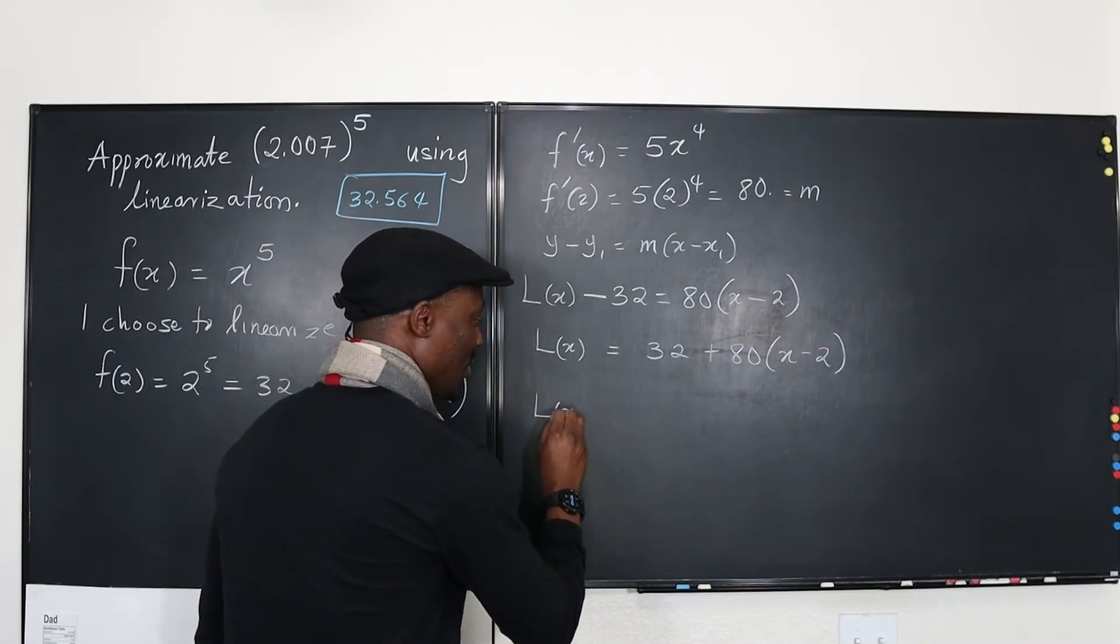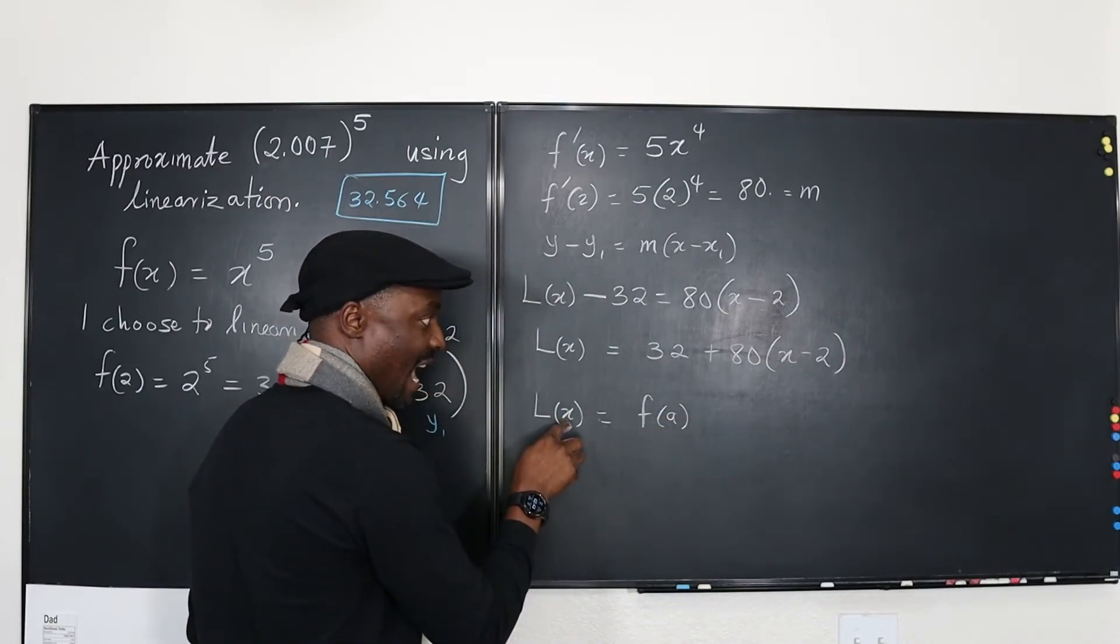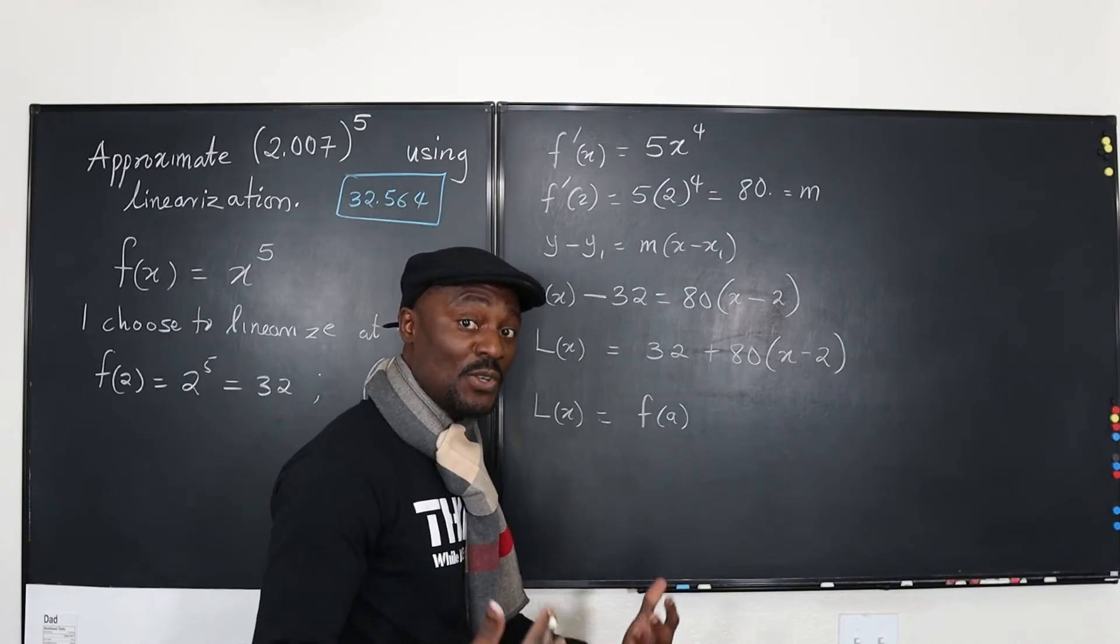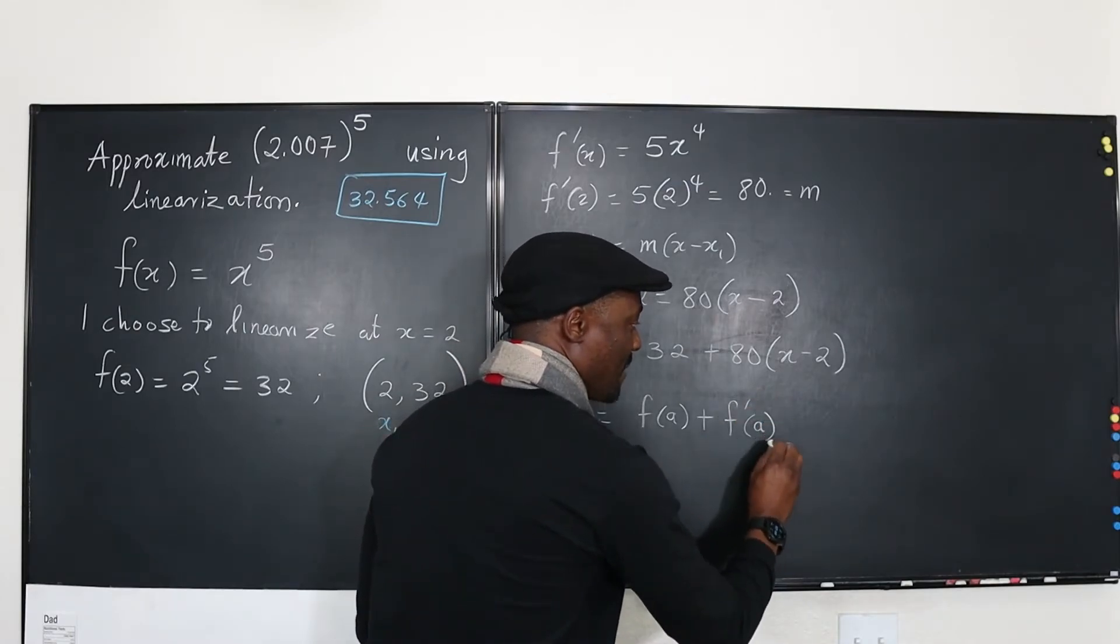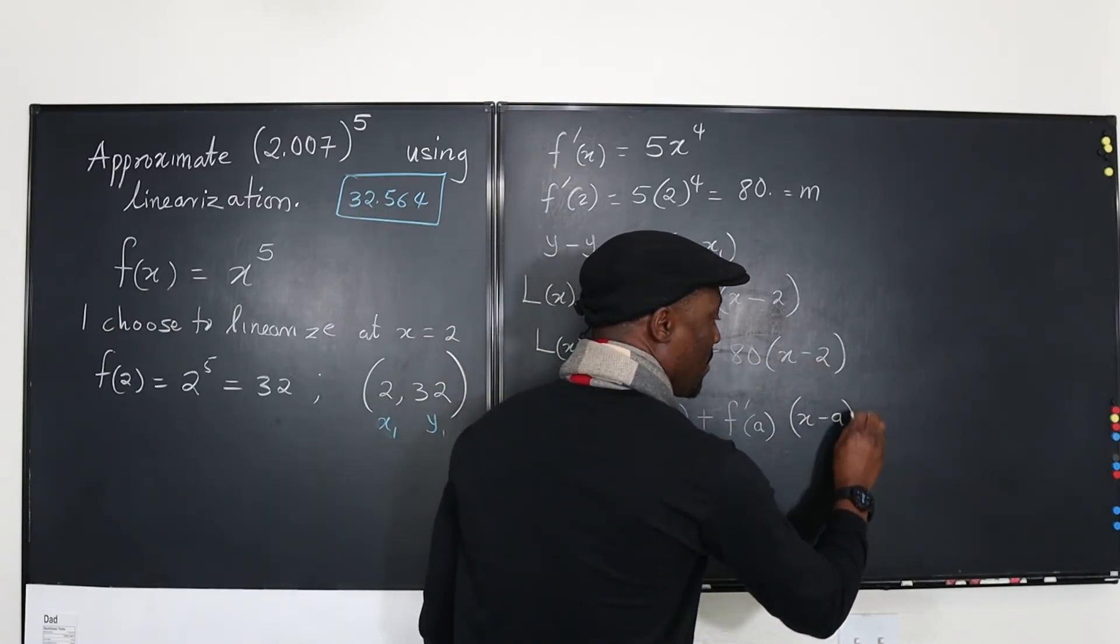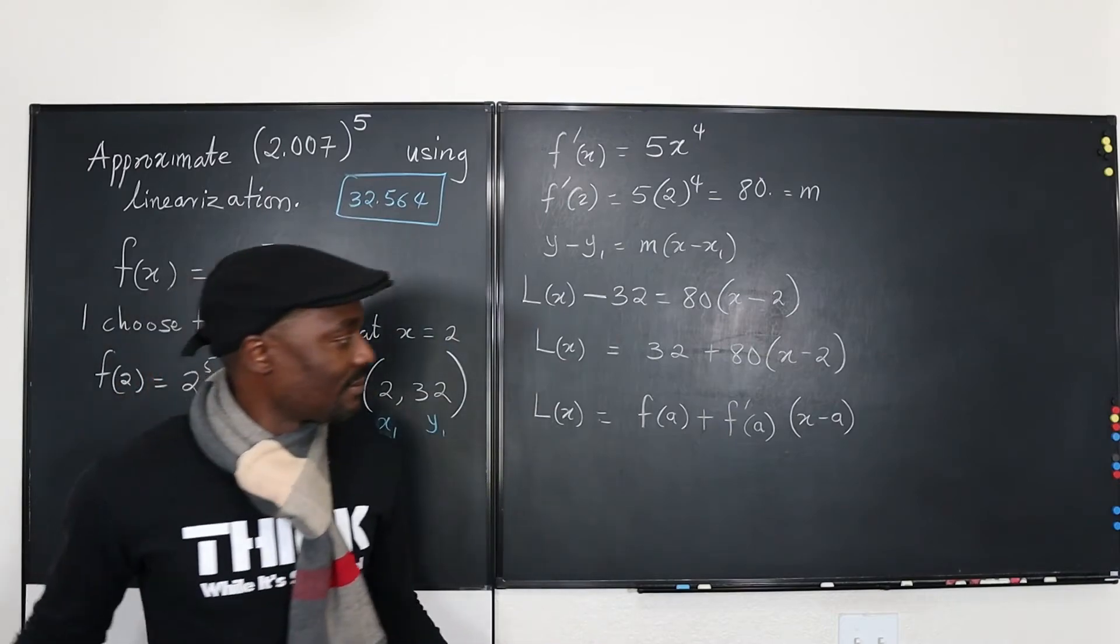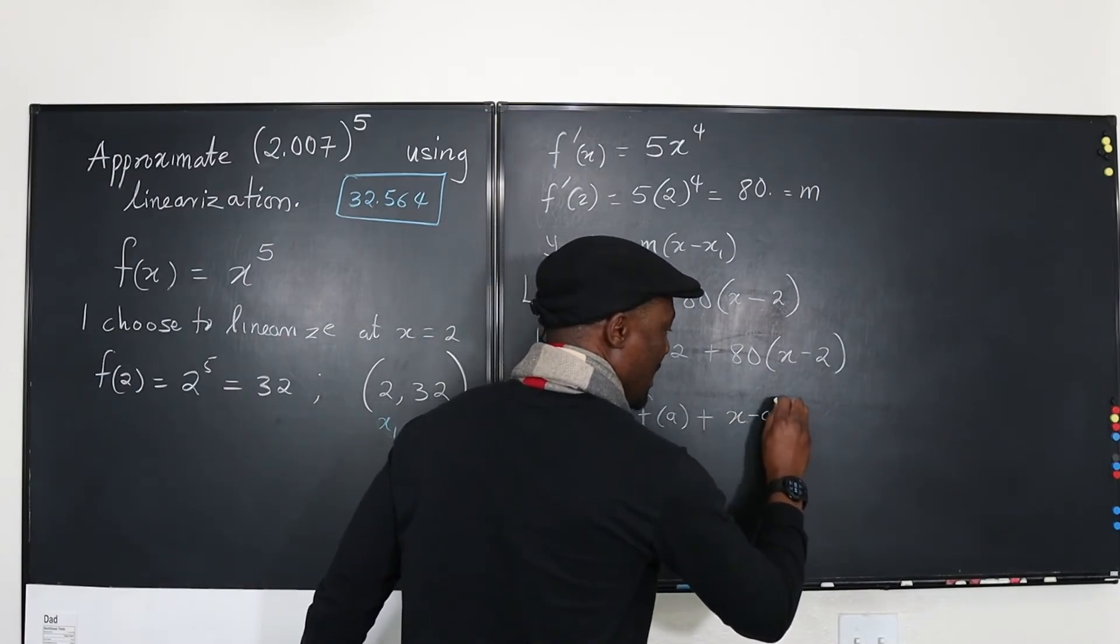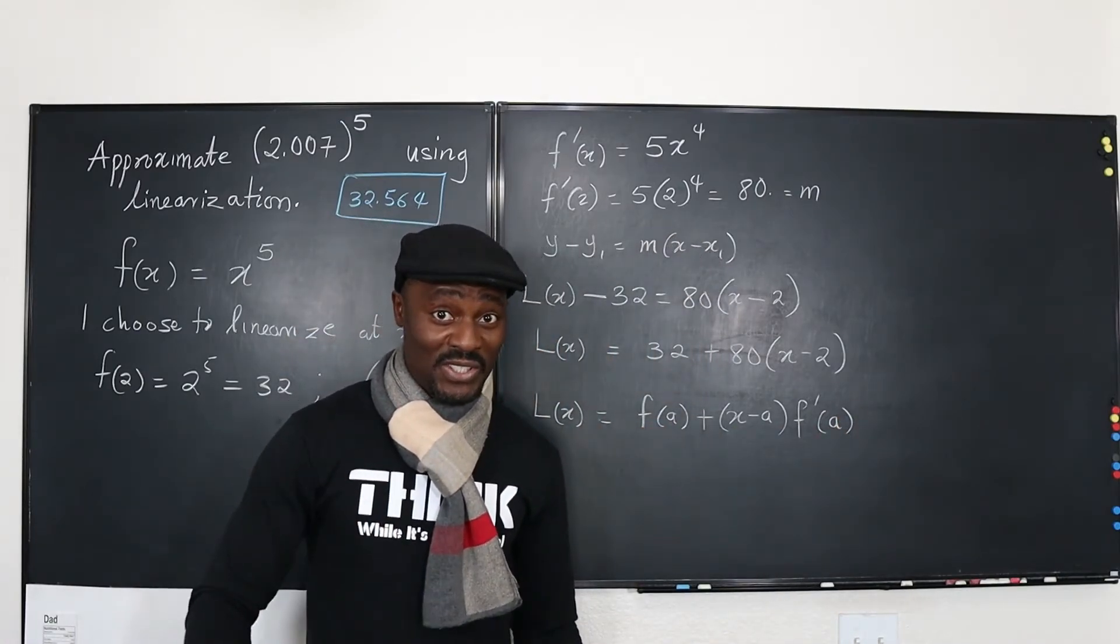It says that the linearization of any function is the value of that function evaluated at a, if you're linearizing at x, is the value of the function evaluated at a, where a is the point that you've chosen, or the point given, plus the slope of the function, which is the derivative of the function evaluated at a multiplied by x minus a. For most formulas, they put the x minus a on this side. So let me write it the way it is written. So they put this here and say, this is going to be x minus a times the derivative evaluated at a.